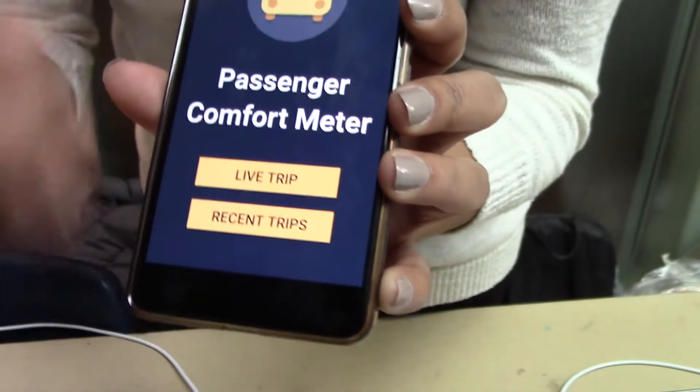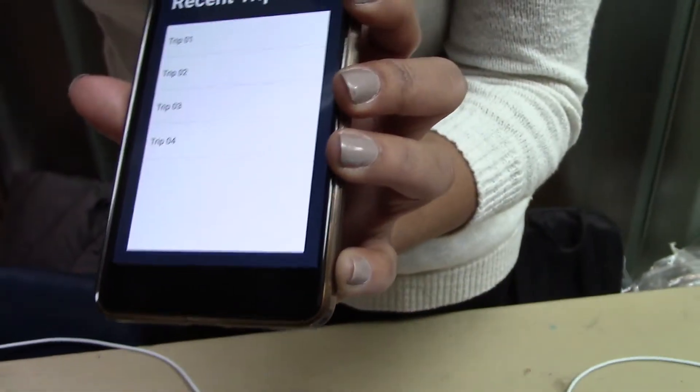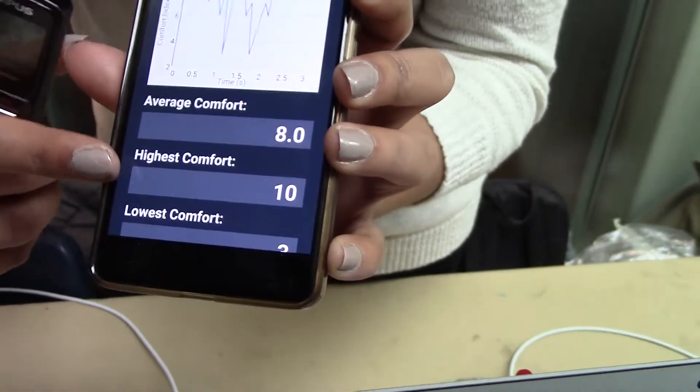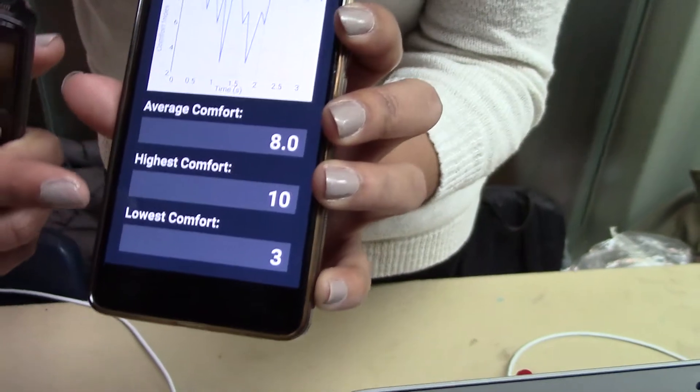When you go back you can look at the recent trips and then have the data of the trips come up and it'll show you the average comfort, the highest comfort, and lowest comfort of the whole trip.